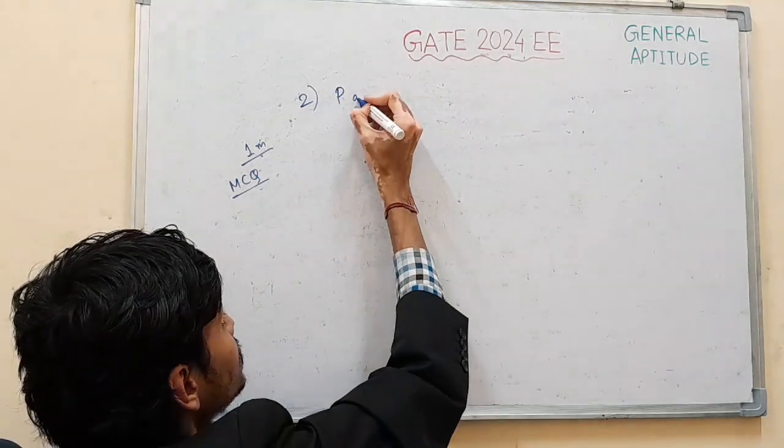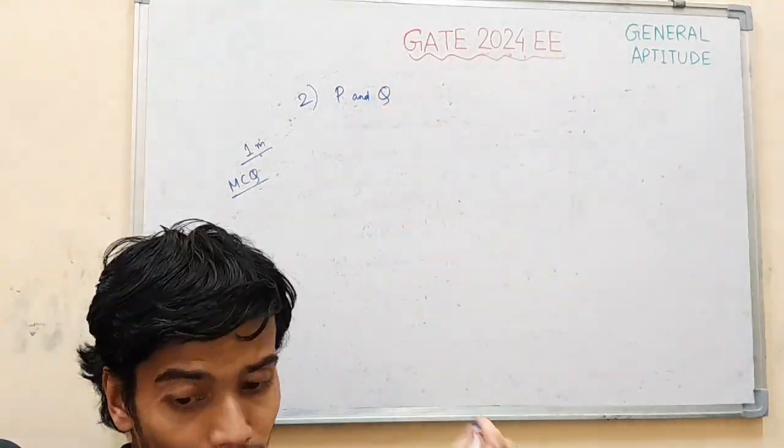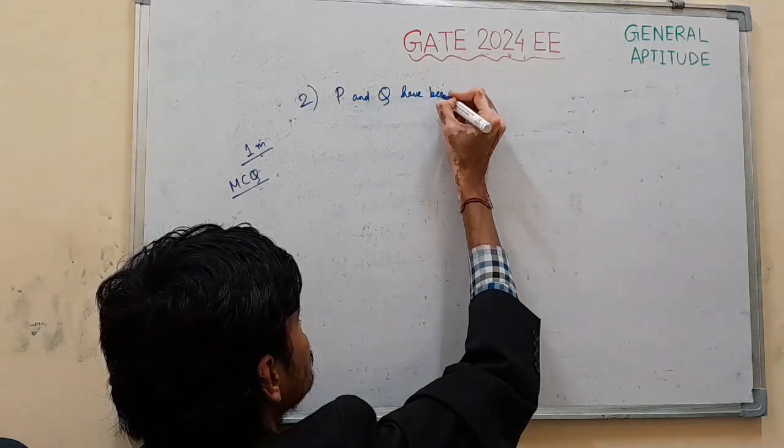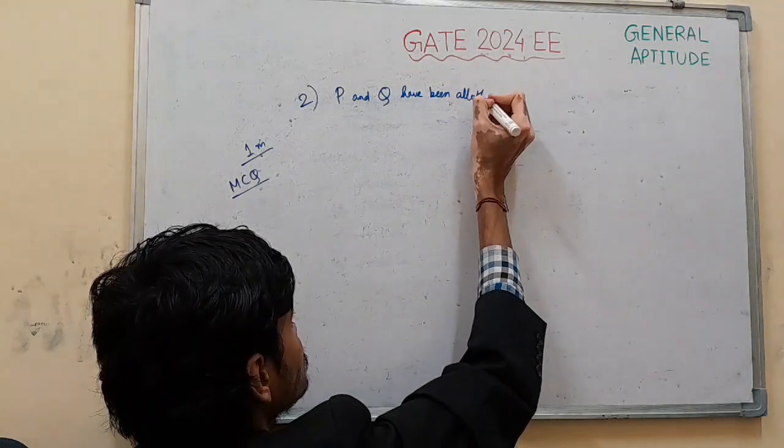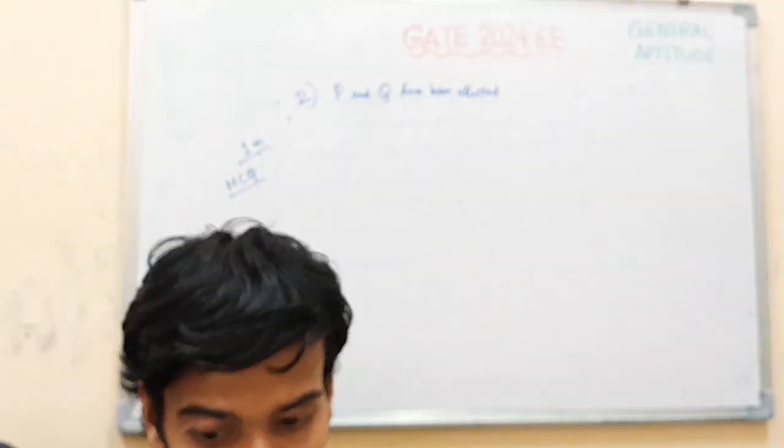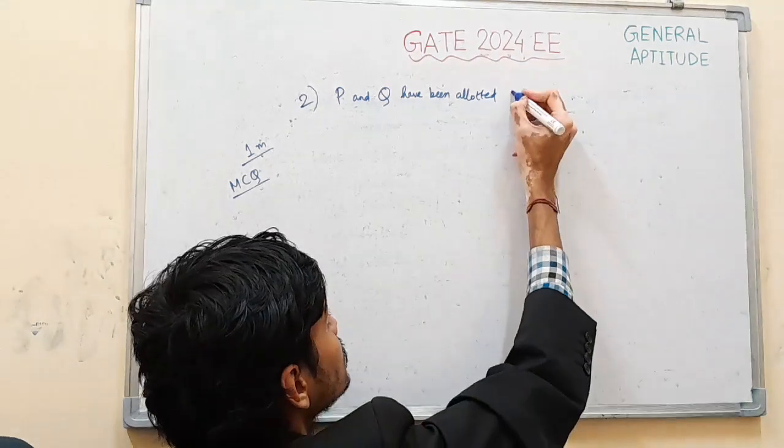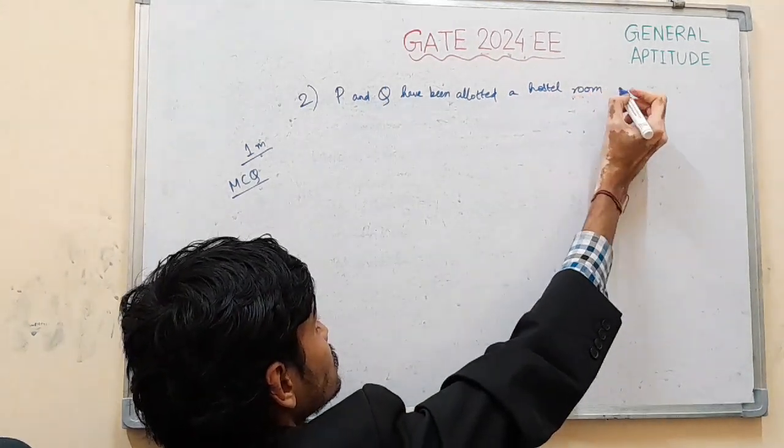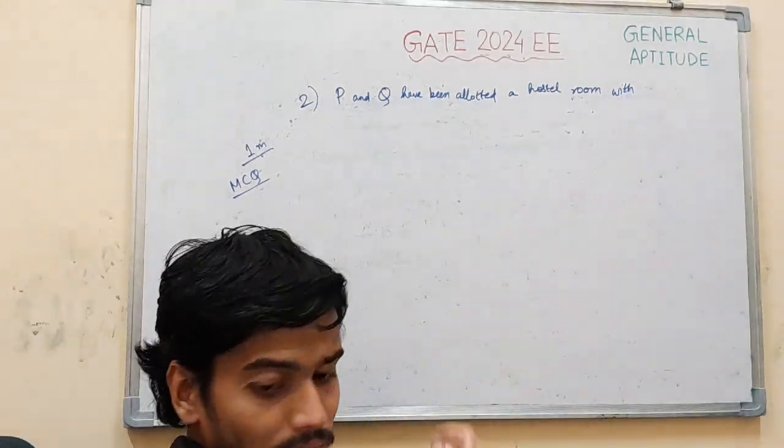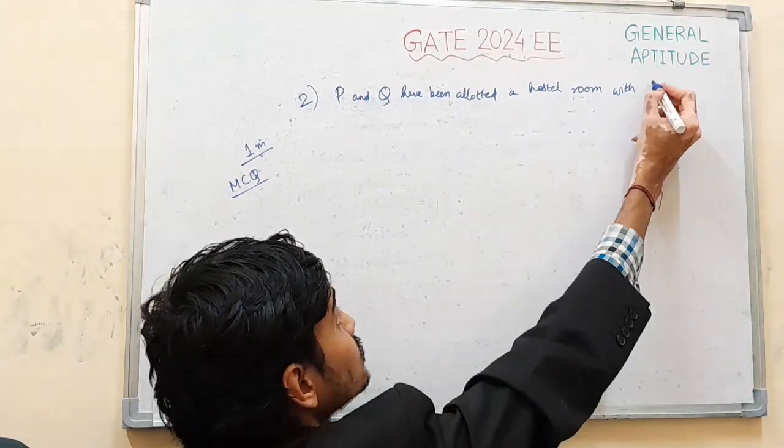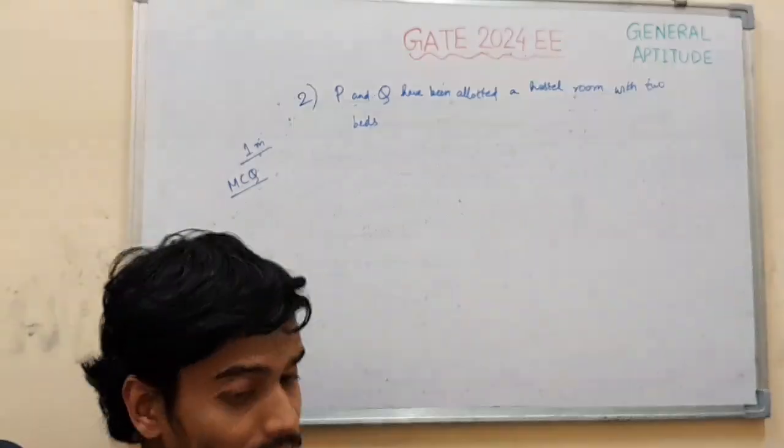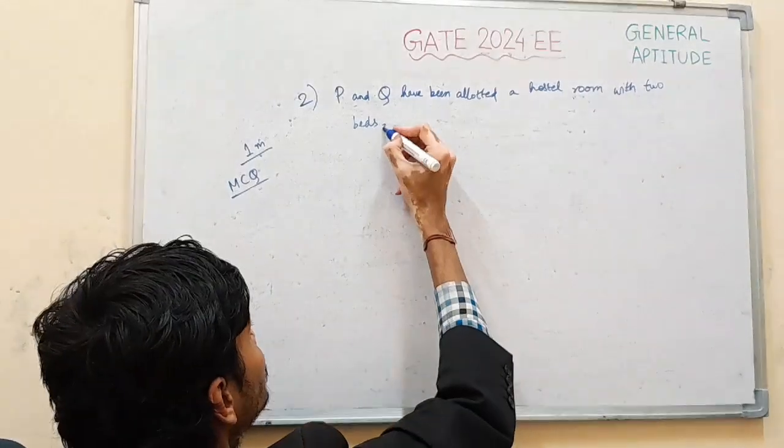It is given in the question that P and Q have been adopted a hostel room with 2 beds and a state table.